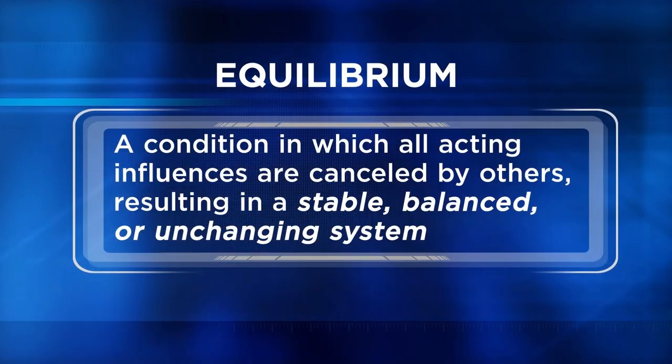Welcome to Chemistry Matters. What is equilibrium? Most of us think of equilibrium as a state that occurs when two things are equal in some way, or when some type of balance is achieved between two things. Scientifically speaking, equilibrium is a condition in which all acting influences are canceled by others, resulting in a stable, balanced, or unchanging system.